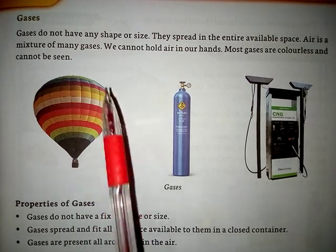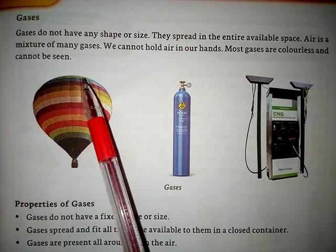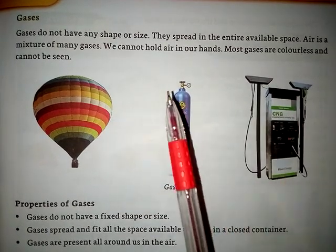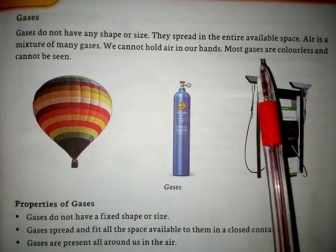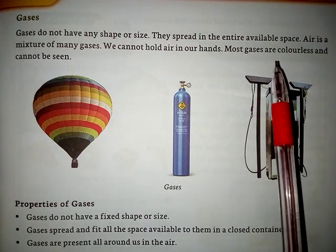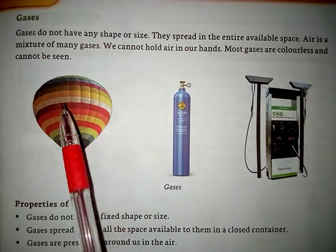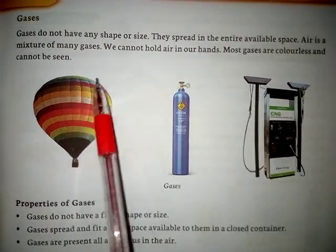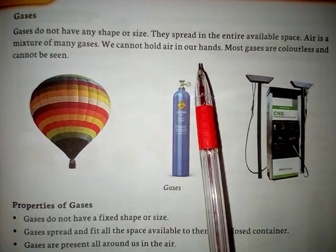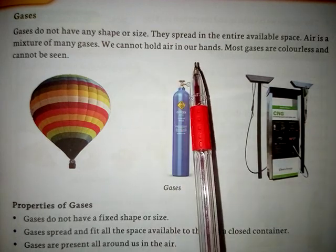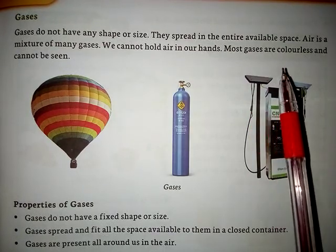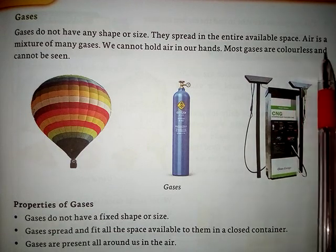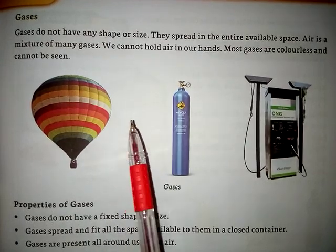The next form of matter is gases. Matter ki last form kya hoti hai? Gases. Gases do not have any shape or size. Gases ka koi bhi shape ya size nahi hota. They spread in the entire available space — unhe jo bhi space milta hai, woh wahan enter kar jaati hain. Air is a mixture of many gases. Jo air hai hamare vaatavaran mein, woh kai saari gases ka ek mixture hai. We cannot hold air in our hands. Most gases are colorless — unhe koi bhi color nahi hota — and cannot be seen.